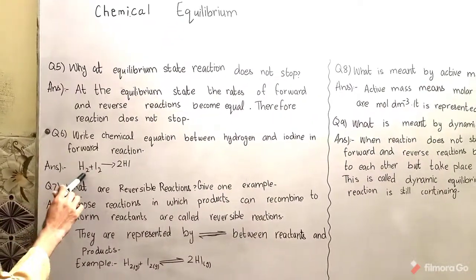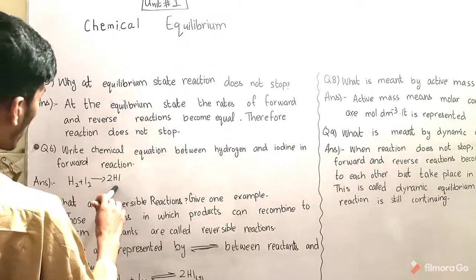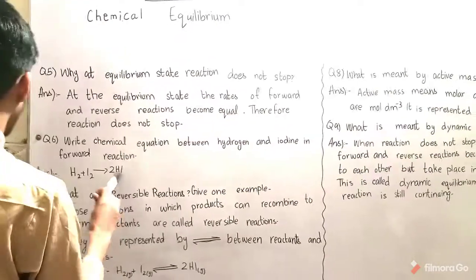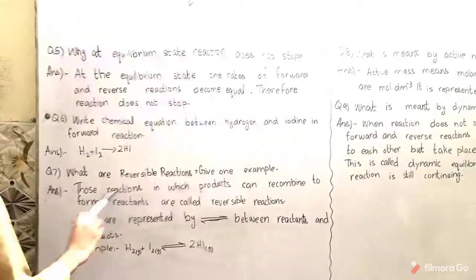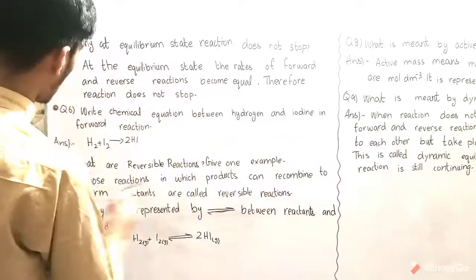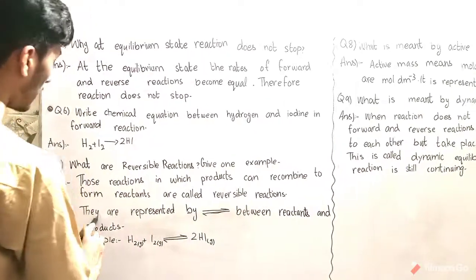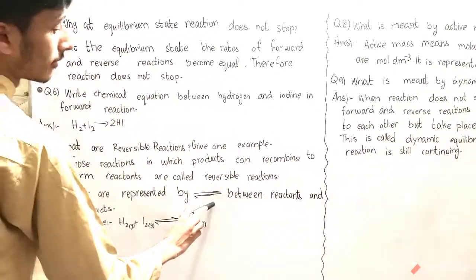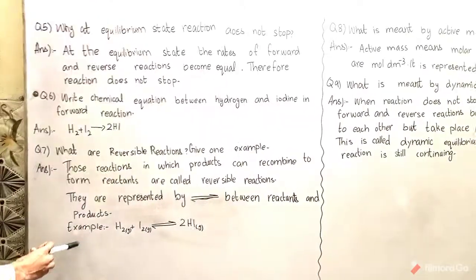Question number seven: What are reversible reactions? Give one example. Those reactions in which products can recombine to form reactants are called reversible reactions. They are represented by double arrow between reactants and products. Example: H2 plus I2 gives 2HI.